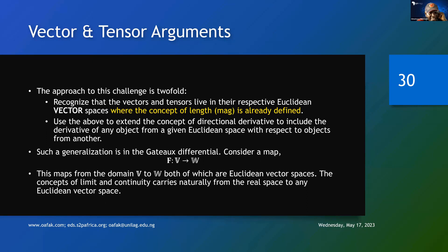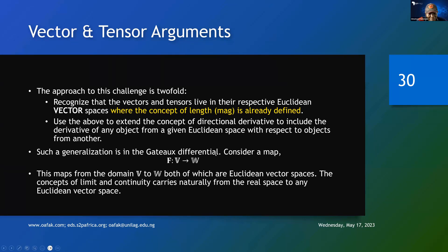Now, we consider a map — just think of it as a table. When you have y = f(x), you put x in one column and y in another, put a value for x, calculate the value for y. That table is called a map — every value of x has a corresponding value of y. This maps the domain V to W, both of which are Euclidean vector spaces. The concept of limit and continuity carries naturally from real space to any Euclidean vector space. We are now doing on slide 31 what we were doing wrongly before.